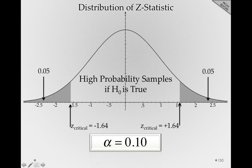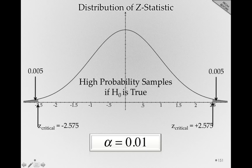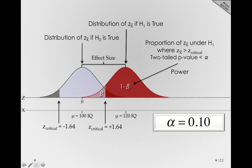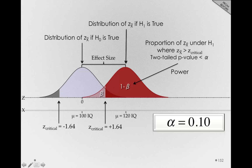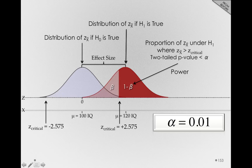Notice what happens when we change alpha. Changing from an alpha of 0.10 to an alpha of 0.01 shifts our critical values out to the tails. And if we look at the diagram with our sampling distributions under the null and the alternative, we can see that shifting from an alpha of 0.10 to an alpha of 0.01 — that is, making our criterion more strict — disallows the use of certain samples to reject the null. Some samples that counted as evidence before will no longer count as evidence if we change our alpha value.